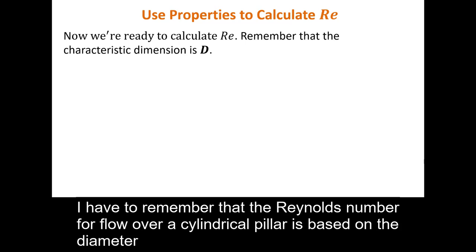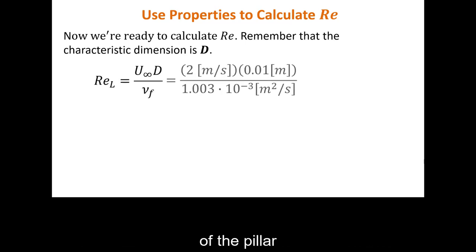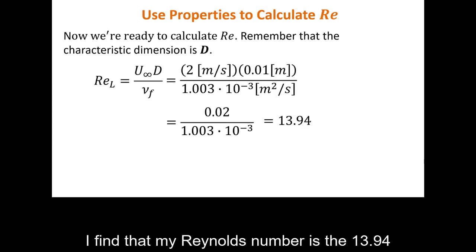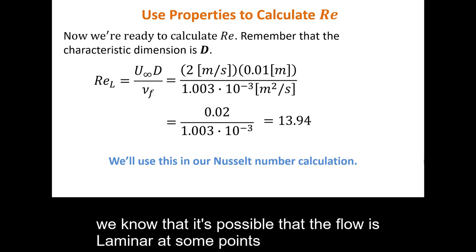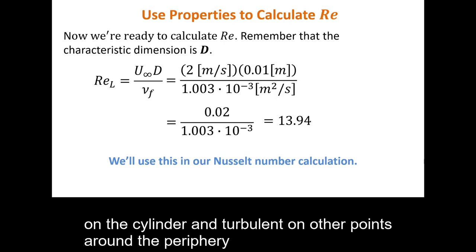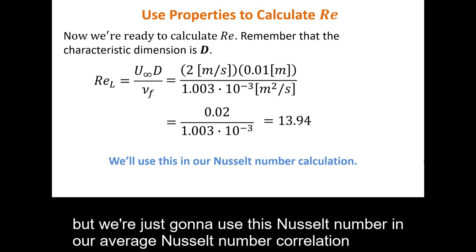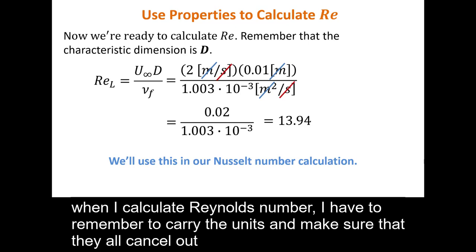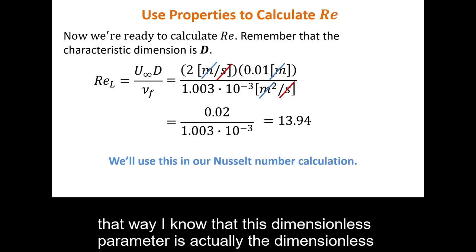I have to remember that the Reynolds number for flow over a cylindrical pillar is based on the diameter of the pillar. I know all of this information so I can calculate the Reynolds number. I find that my Reynolds number is 13.94. We know that it's possible that the flow is laminar at some points on the cylinder and turbulent at other points around the periphery, but we're just going to use this in our average Nusselt number correlation. When calculating the Reynolds number, I have to remember to carry the units and make sure they all cancel out, confirming that this dimensionless parameter is actually dimensionless.